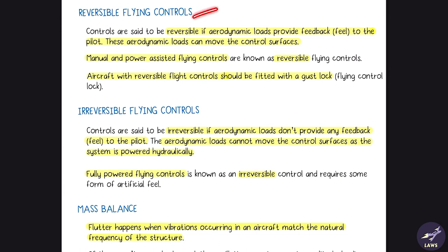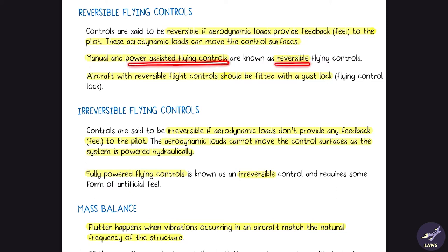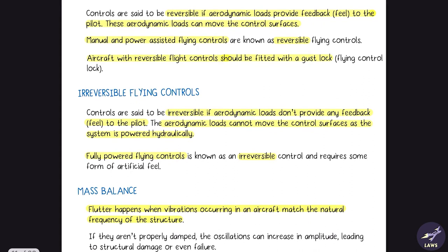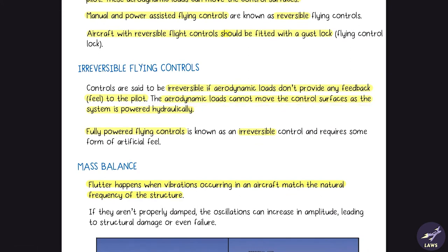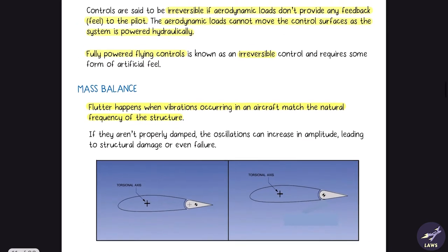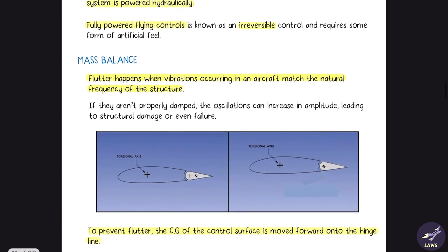Reversible flying controls are those where aerodynamic loads provide feedback or feel to the pilot. Manual flying controls and power assisted flying controls are reversible because some power is provided by the pilot. Aircraft with reversible flying controls should be fitted with a gust lock. Irreversible flying controls are fully hydraulically powered and provide no feedback or feel to the pilot — modern aircraft have irreversible flying controls.